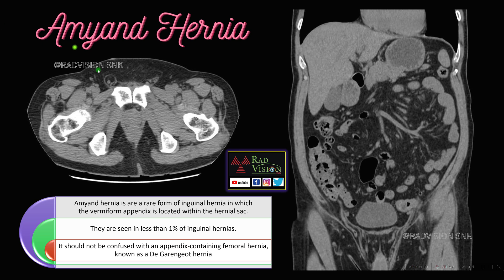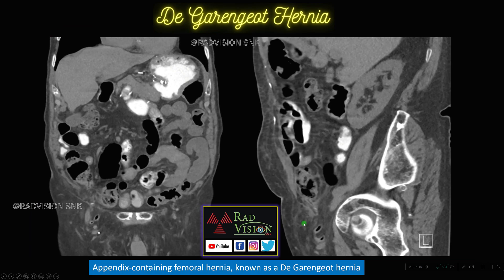Next, here you can see the appendix visualized in the right inguinal hernia — this is called Amyand hernia. Here you can see the appendix herniating into the right inguinal region. The close counterpart is de Garengeot hernia, where you can see herniation of the appendix into the femoral region — herniation of the appendix in the femoral region is called de Garengeot hernia.